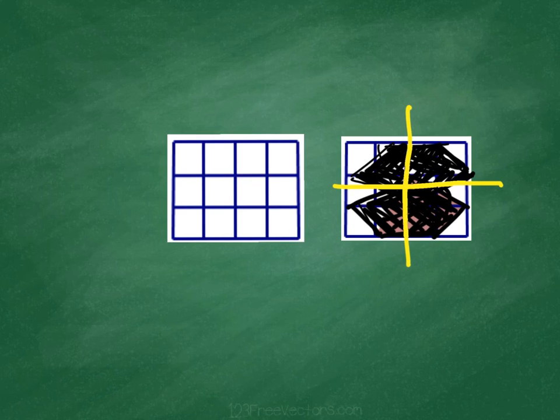So if you want to create lines of reflection, then just reflect the shape that you're given to generate those.